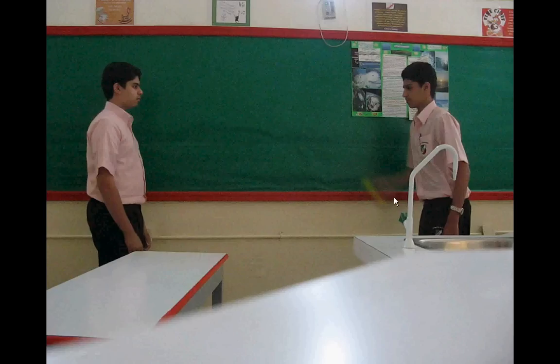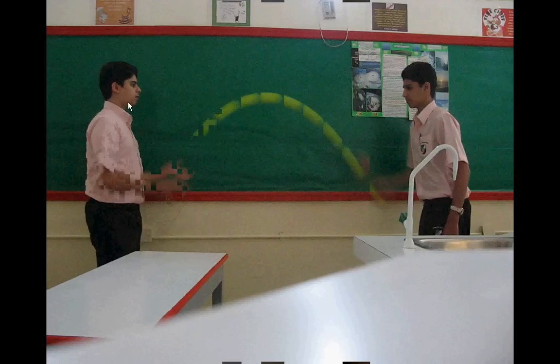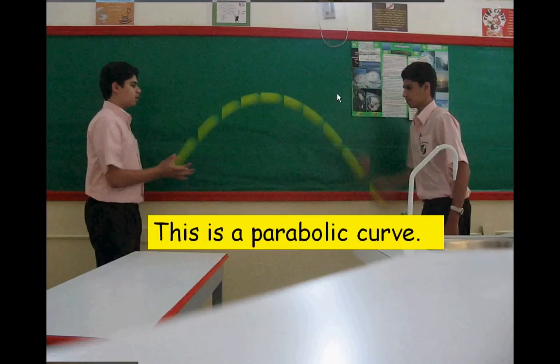These are stills taken from a video of Talal passing a tennis ball to Ahmed. You can clearly see that the tennis ball follows a curved path. This kind of curve is called a parabolic curve.